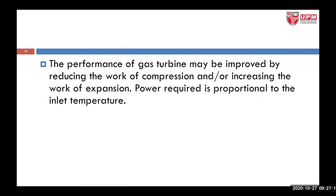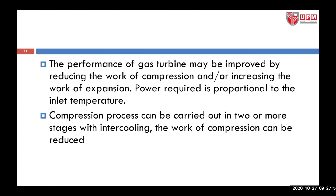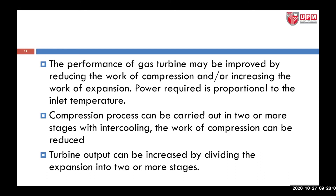The performance of the gas turbine may be improved by reducing the work of compression and/or increasing the work of expansion. Performance can be increased whenever you reduce the compression work or increase the work of expansion in the turbine. Power required is proportional to the inlet temperature of the turbine. The compression process can be carried out in two or more stages with intercooling, and the turbine output can be increased by dividing the expansion into two or more stages.